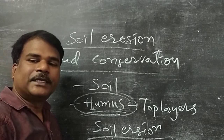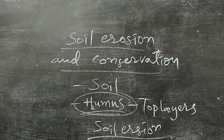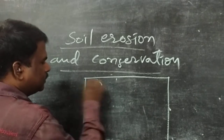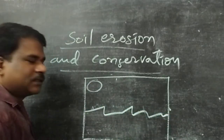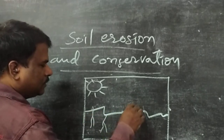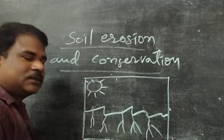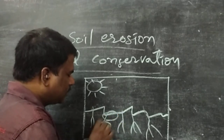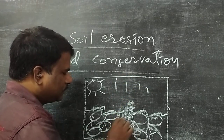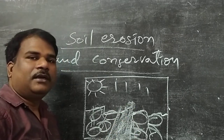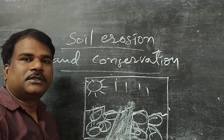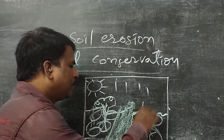First of all, we need to know how the formation of soil takes place. Millions of years ago, only big rocks were present. Due to heavy rainfall and sunlight, rocks develop cracks, and those cracks extend. The rocks break into smaller stones and smaller particles. Due to heavy rainfall, water moves across this area and soil is formed. Whatever nutrients and remains of plants and animals are present help to grow plants, and plants slowly develop in this area.